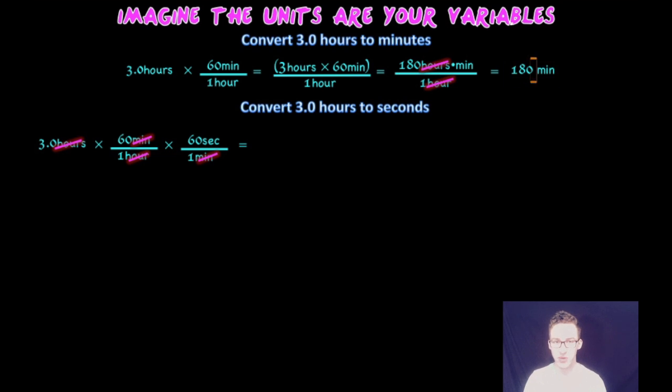This time we're going to set up 3.0 hours times 60 minutes over one hour times 60 seconds over one minute. Now notice I've canceled out the units before performing any of the calculations. This will simplify things as we go.